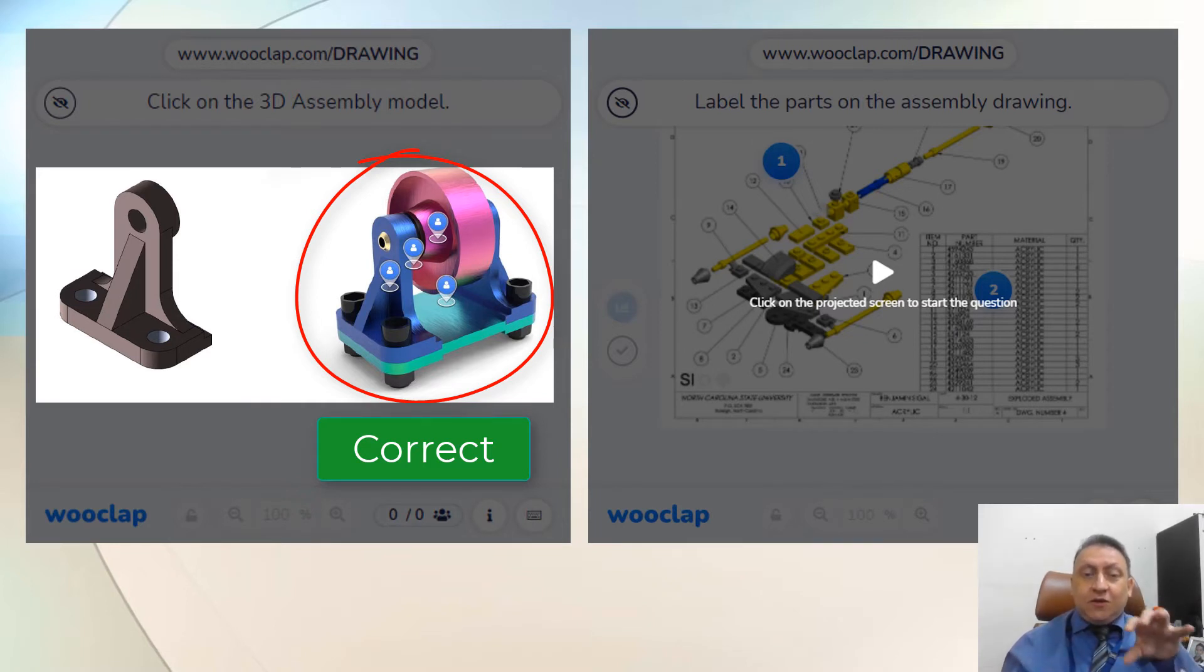For the second question, I want to label what are these circles with lines, and also label what's this here, table. Let's just type your answer, please.